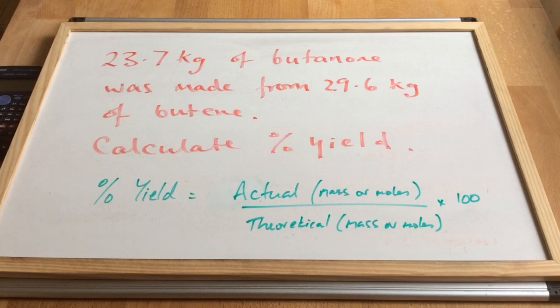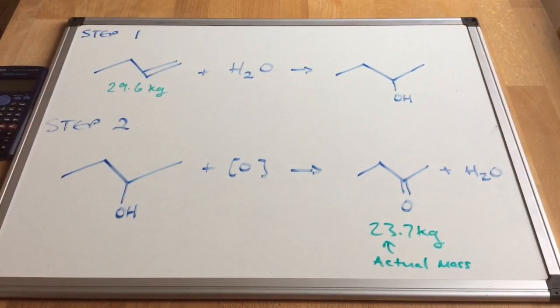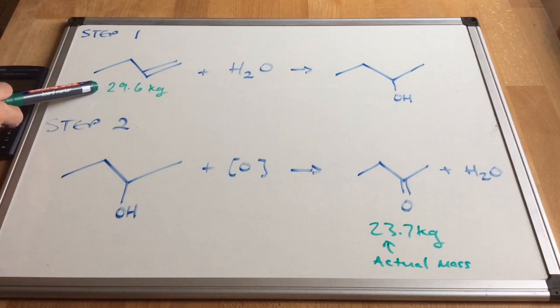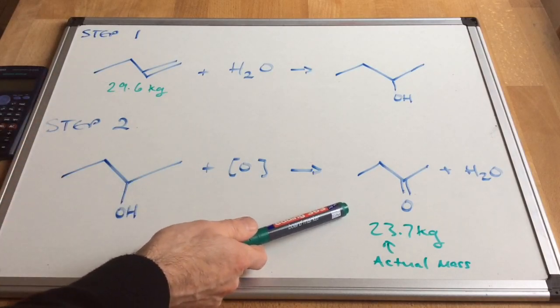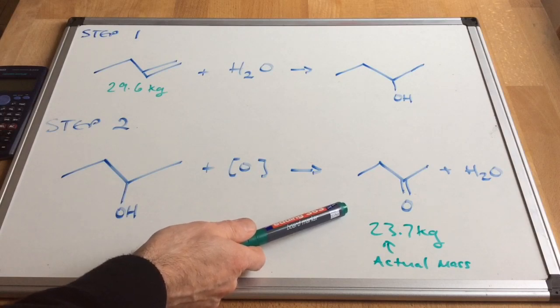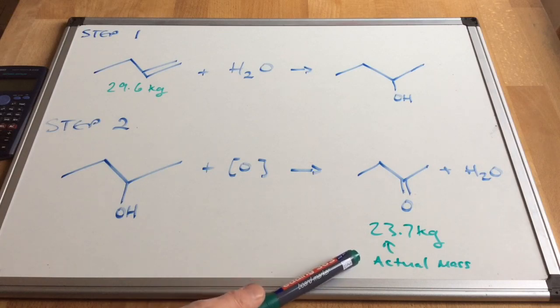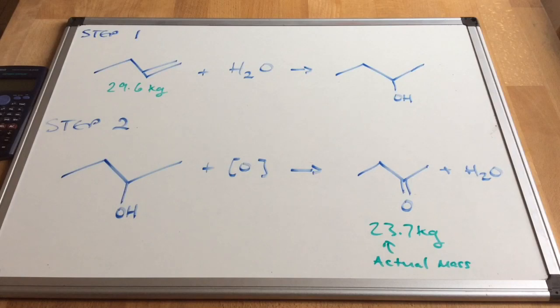So there's our reaction scheme again and you can see I've included the masses on there. Our starting mass of butane is 29.6 kilos and we are told that we produced 23.7 kilos of butanone. So this is the actual mass that was produced; what we need to know is what the theoretical mass would have been.